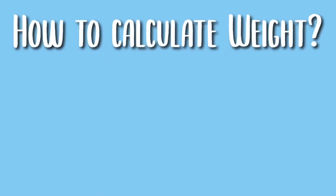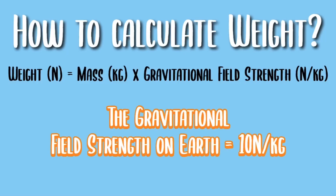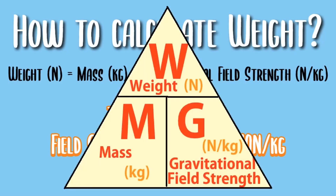Weight is another type of force. So how do we calculate weight? Weight equals the mass times the gravitational field strength. The gravitational field strength on Earth is 10 newtons per kg, but on other planets it would be different — for example, on Mars it is around 4 newtons per kg. Here is the triangle formula for calculating weight.